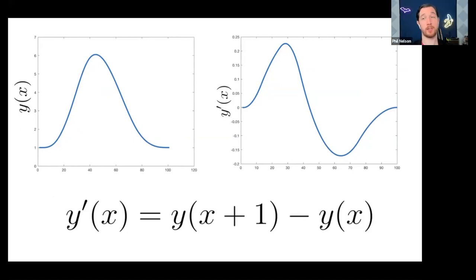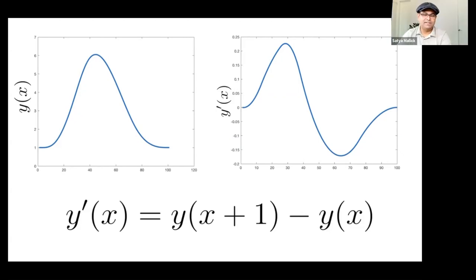Seems like people are following along. A quick reminder to folks joining late: today's episode is not about CVAT — we'll cover that in a few weeks. This episode is about seamless cloning using OpenCV. Until now we've covered the derivative of a 1D function, and we'll see how that translates to how we can use it for seamless cloning.